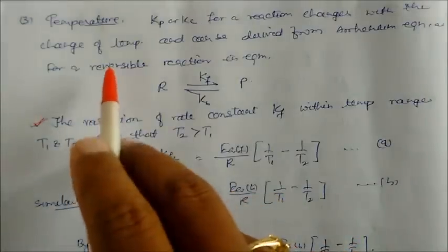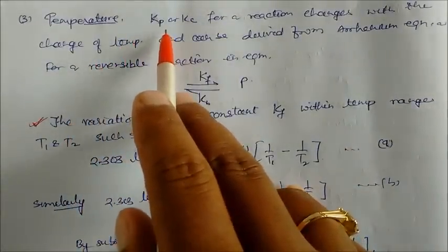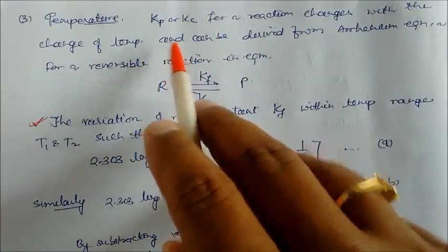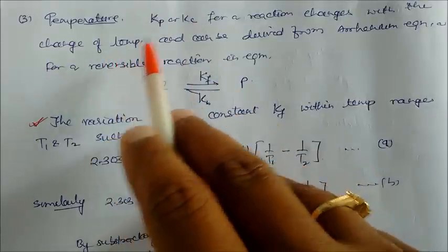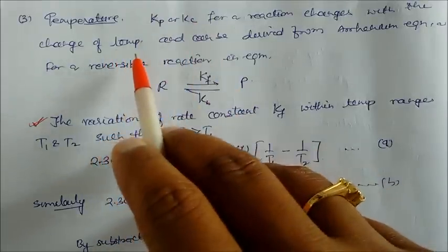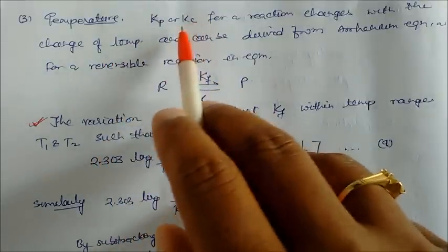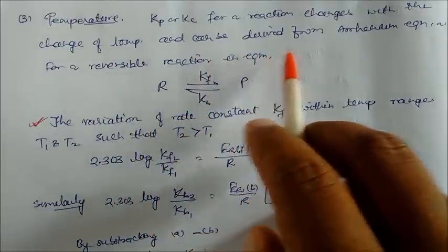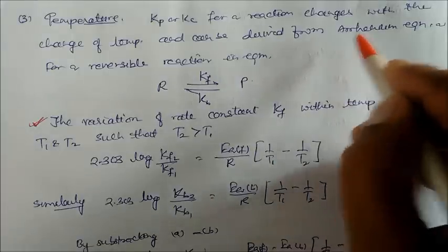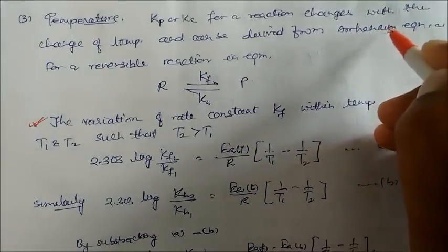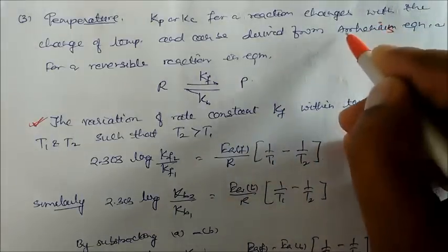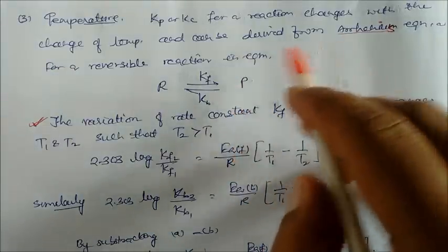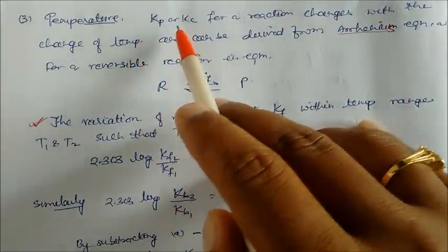The third factor is temperature. Kp or Kc for a reaction changes with a change in temperature. The equilibrium constant depends on temperature, and when temperature changes, the constant also changes. This relationship can be derived from the Arrhenius equation, which we will study in a coming chapter.